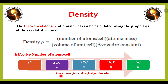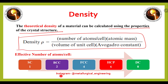The next topic is theoretical density. The theoretical density of a material is calculated using crystal structure properties. The formula is: number of atoms per unit cell × atomic mass, divided by volume of unit cell × Avogadro's constant. Effective atoms per unit cell: simple cubic = 1, BCC = 2, FCC = 4, HCP = 6, diamond cubic = 8.